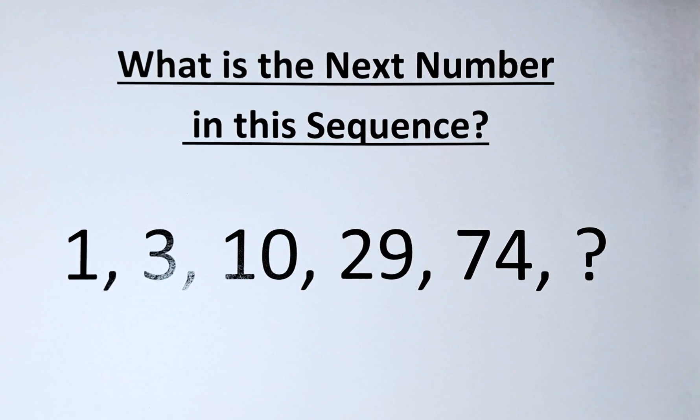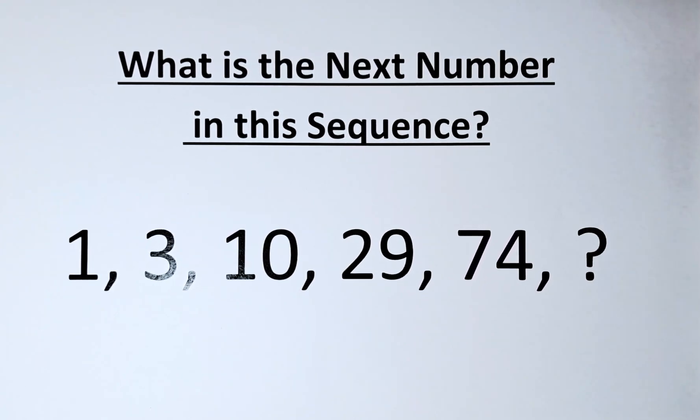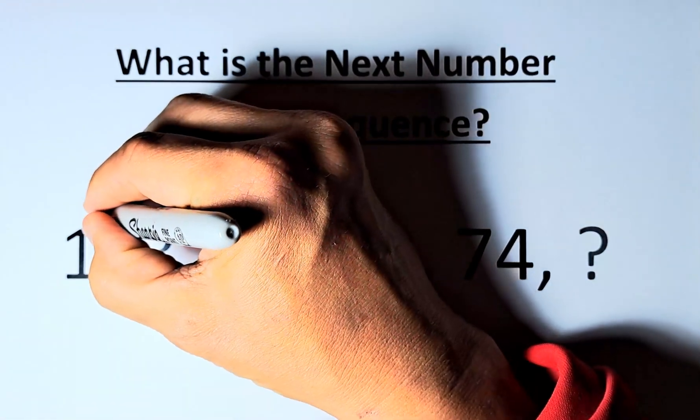So 1 to 3, 3 to 10, 10 to 29, 29 to 74, there's a pattern to it. So 1 to 3, what you need to do...